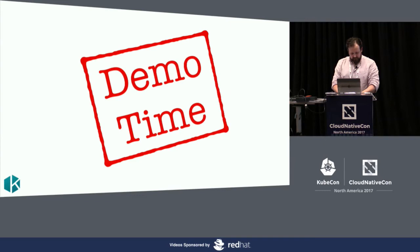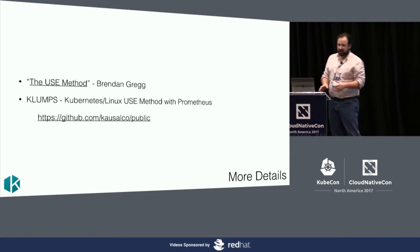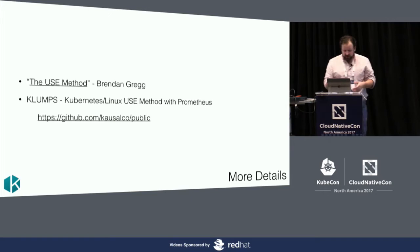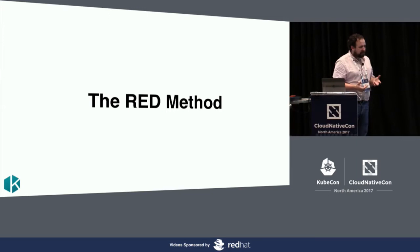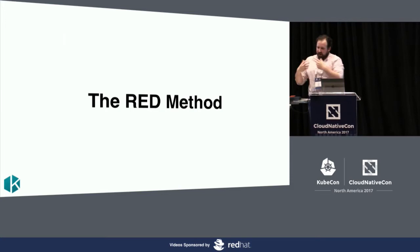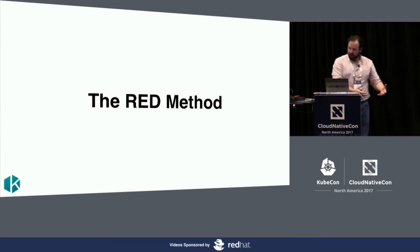For further reading on this, the USE method website by Brendan Gregg is absolutely fantastic — it goes into a lot more detail, pros and cons and side effects. Now the RED method, which we're really here to talk about. The RED method was inspired by a question we had at work: why aren't we using the USE method? The USE method is for resources and the RED method is for services. The USE method tells me if my machines are healthy, not if my services are healthy.